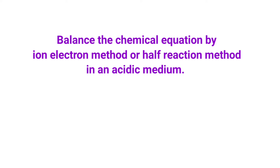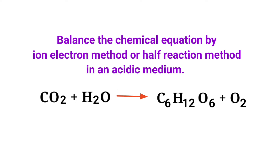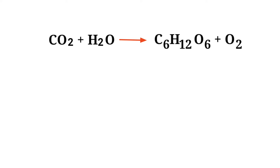Balance the chemical equation by the ion electron method, or half reaction method, in an acidic medium. The equation is: carbon dioxide plus water gives glucose plus oxygen. In the ion electron method, one reaction is divided into two half reactions, which are then balanced and added together.